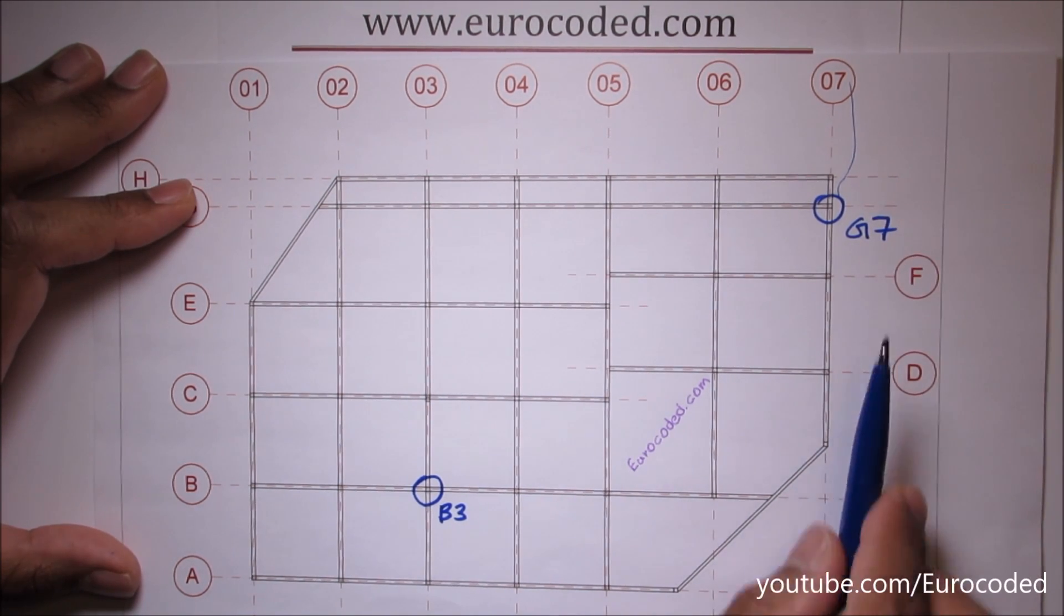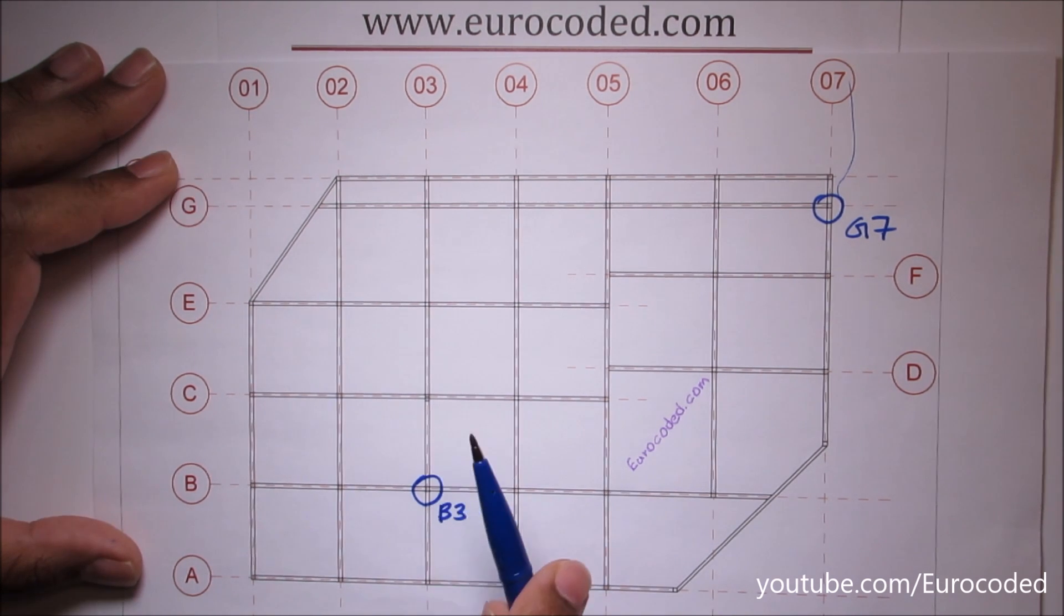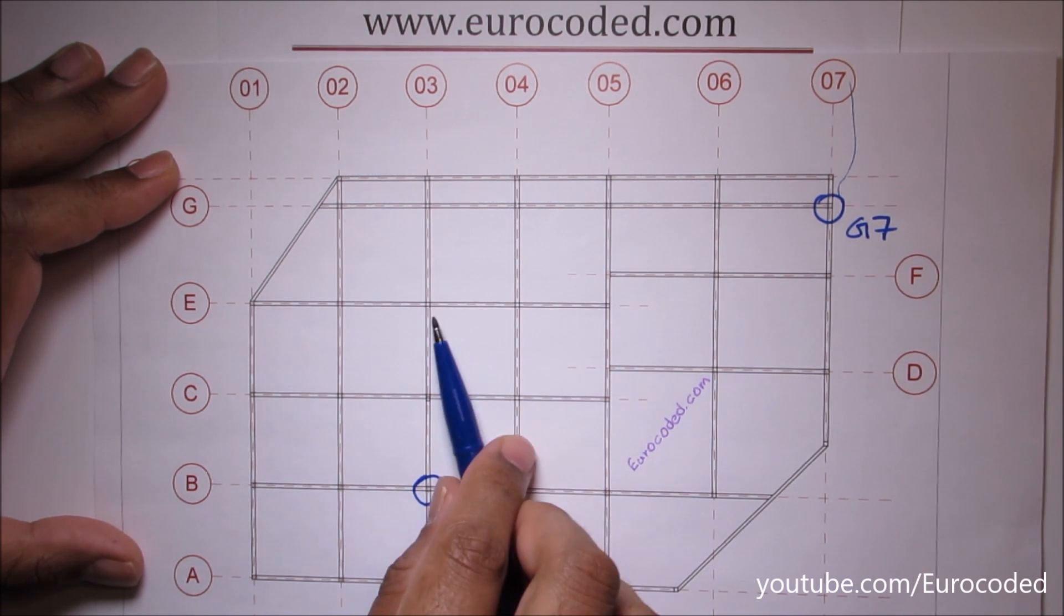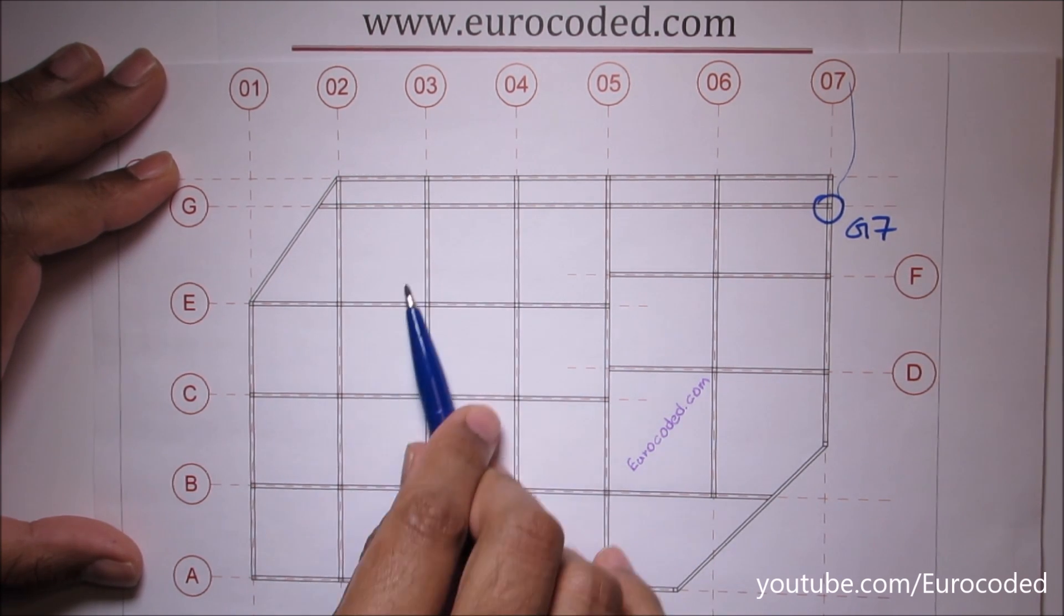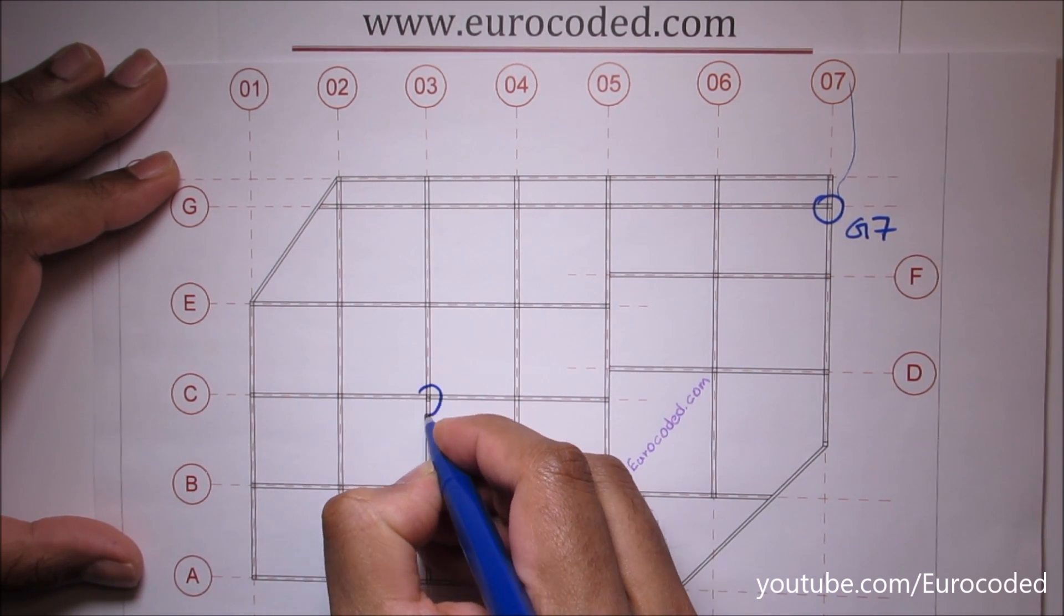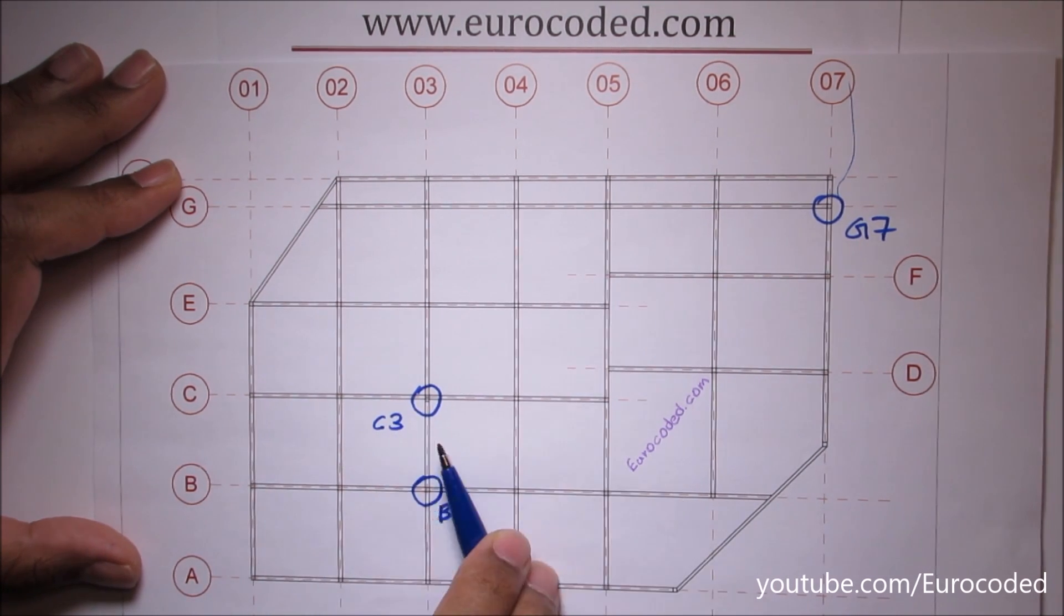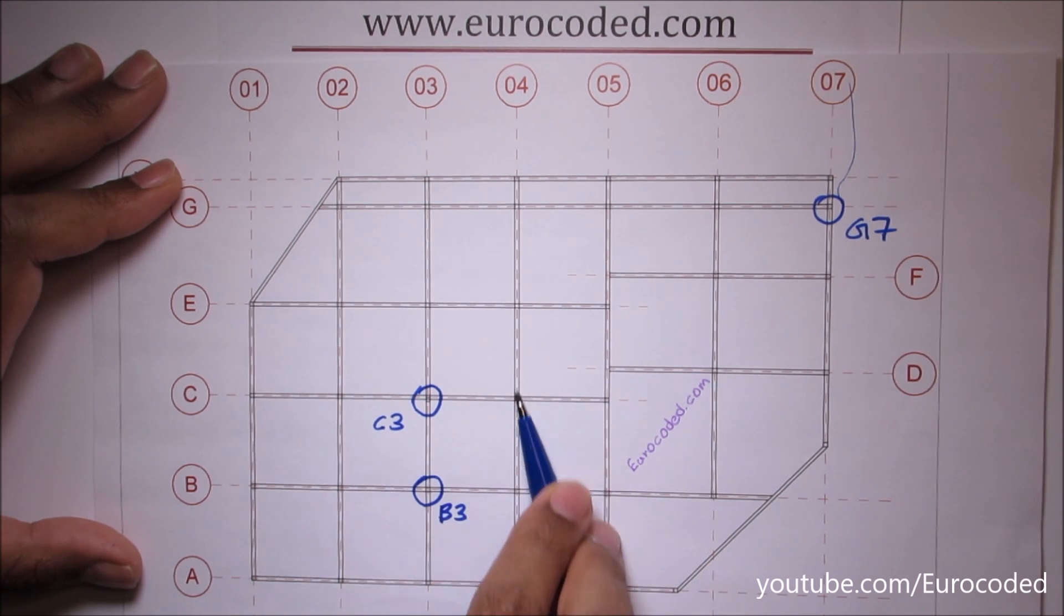Once you have numbered all of your columns, then you can go on to number your beams. Typically what you do is you pick the column situated in the lower left corner of a particular panel where you want to number your beams. If you take this panel, this particular panel, then we would pick this column, which is C3.